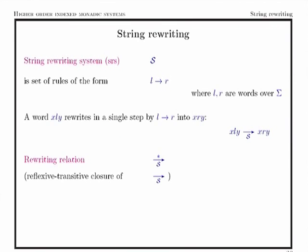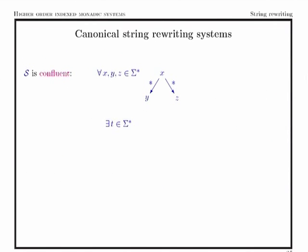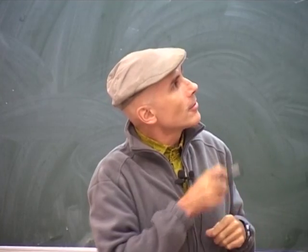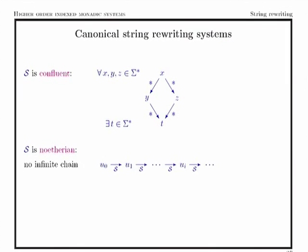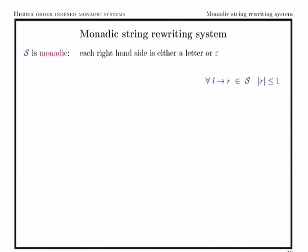A string rewriting system is a way of transforming words into words using rules: by identifying within a word a left-hand side of a rule and replacing it with the right-hand side. We get in this way a single-step rewriting relation, which may be iterated, and we get the transitive closure. Important properties are confluence — if we can rewrite a word in different ways, there is always a possibility to join these two paths — and termination (noetherian), meaning we have no infinite chain of rewritings. When both properties hold, the system is called canonical.